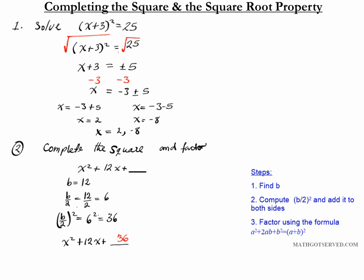Now that you have a perfect square trinomial it's very easy to factor. You can use the x game, the box method, or guess and check. The fastest shortcut for factoring a perfect square trinomial is to take the square root of the first and last terms and bring down the middle sign. The square root of x squared is x, the square root of 36 is 6, so the factored form is quantity x plus 6 squared.